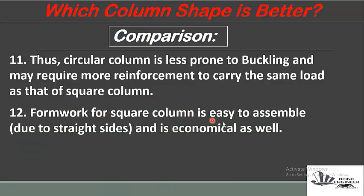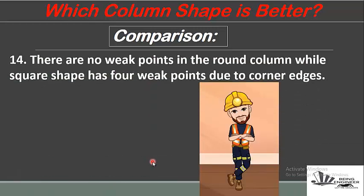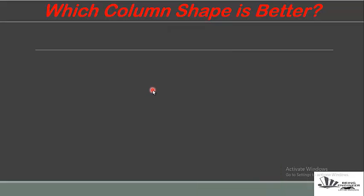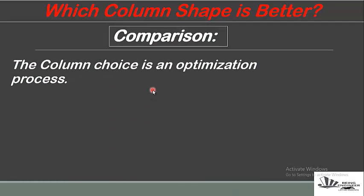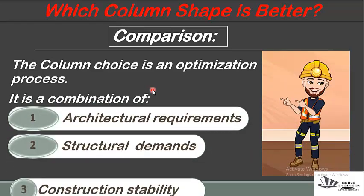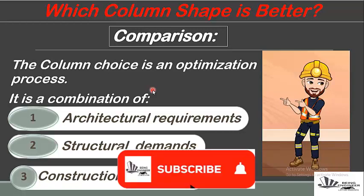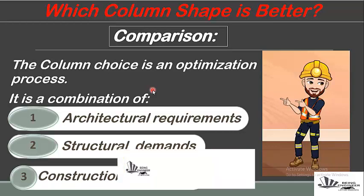Formwork for square columns is easy to assemble due to straight sides and is economical. Circular columns are aesthetically pleasing. Last but not least, there are no weak points in a round column, while square shapes have four weak points due to corner edges. In the end, the column choice is always an optimization process — a combination of architectural requirements, structural demands, and construction stability. Don't forget to subscribe and press the bell icon for the latest videos.